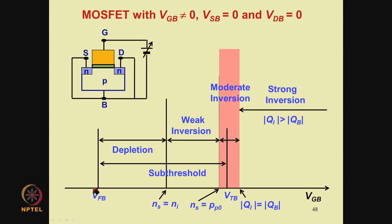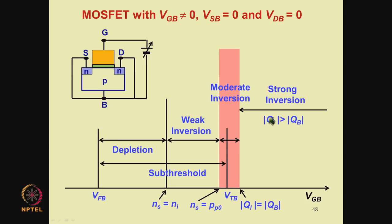On the VGB axis, the important voltages are the flat band voltage, the threshold voltage, and then other important points based on the surface concentration of minority carriers — electrons in an n-channel device. So you have the depletion region, weak inversion region, moderate inversion region, and strong inversion region. The strong inversion region is where the inversion charge dominates over the depletion charge. The region from VGB equal to VFB to VGB equal to VTB is referred to as the subthreshold region.